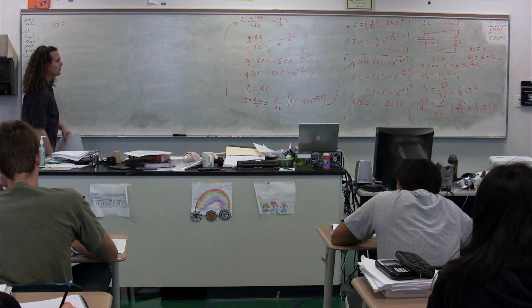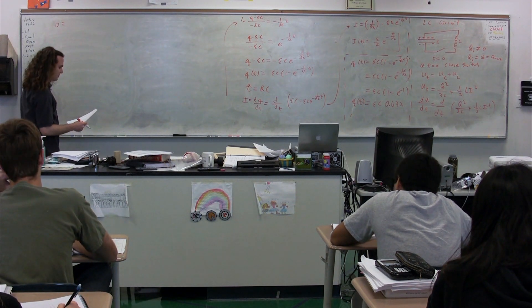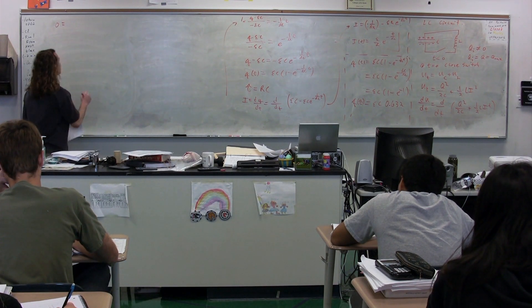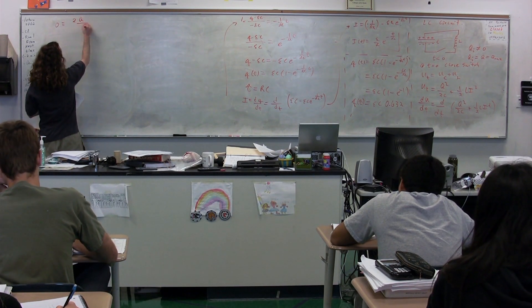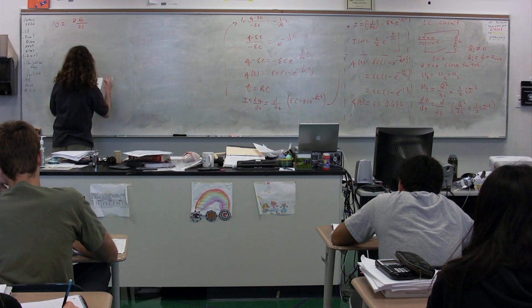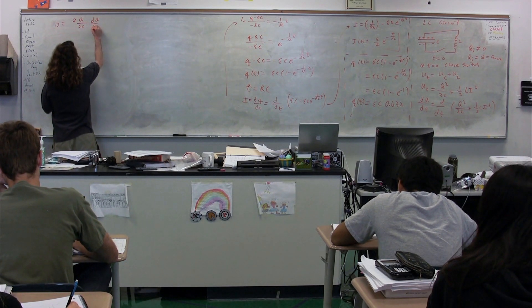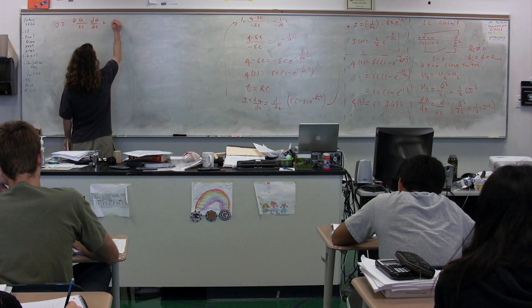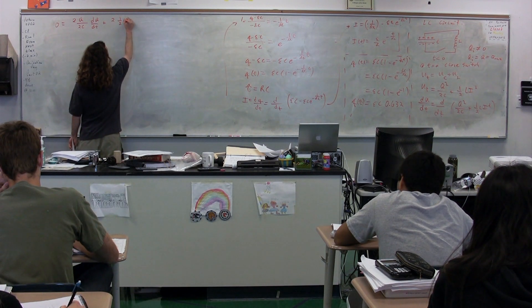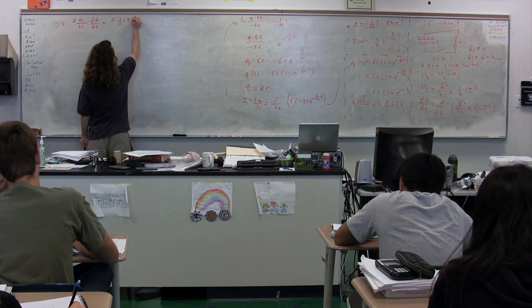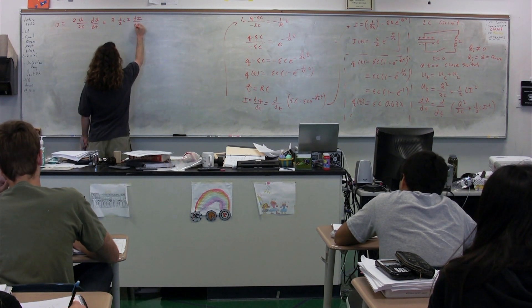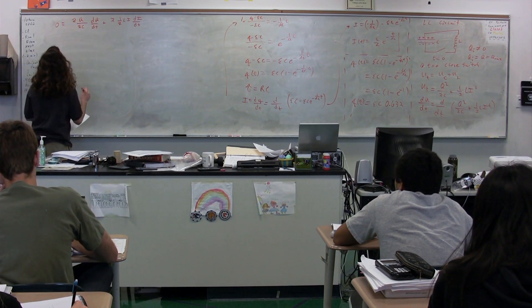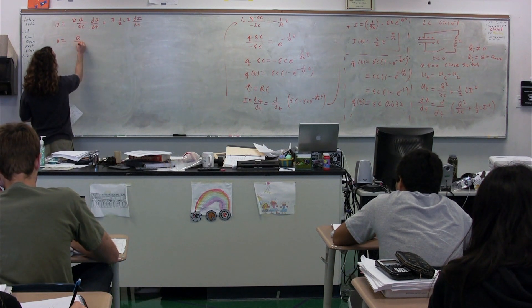Zero then is going to be equal to the derivative of the charge squared as a function of time. So we have 2Q over 2C times dQ/dt using the chain rule here. Plus we're going to have 2 times one half L times I times dI/dt. The twos cancel out and the halves cancel out.